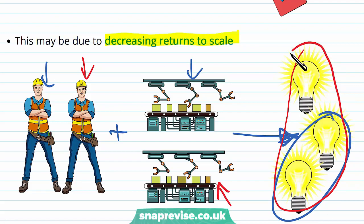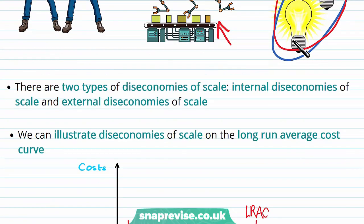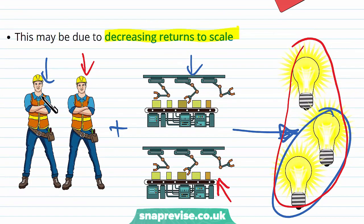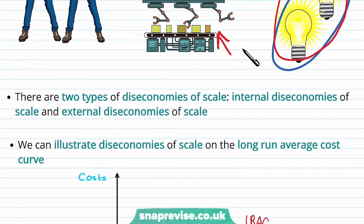So in effect, we are not getting as much out for the cost. And remember as well that the cost of each worker is the same and the cost of each machine is also going to be the same.